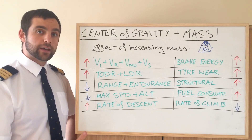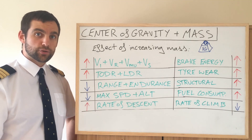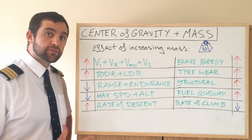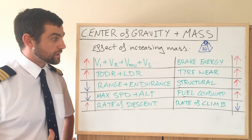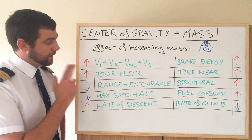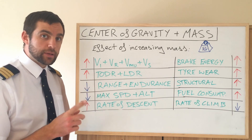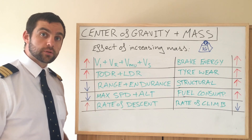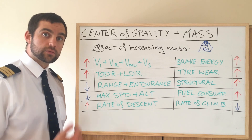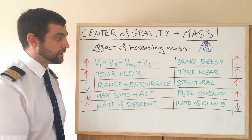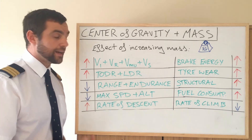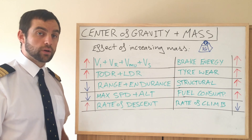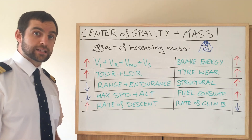Let's talk about the effect of mass on an aircraft. If we increase the mass, it's going to have various negative effects. V speeds are all increased with increased mass. VR, the speed at which we rotate, is going to increase because we're going to need more speed and more lift to lift that weight. Our minimum stick speed is going to be greater, and our stall speed is going to be greater. A lighter aircraft is very hard to stall; a heavy one is much easier to stall.